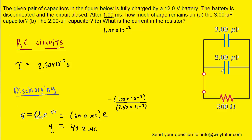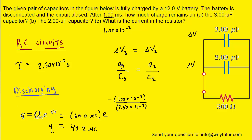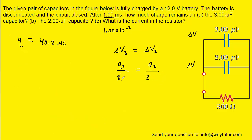Bringing back the original two capacitors, we see they are still in parallel. Parallel capacitors have the same potential difference, so we set the potential difference across the 3 microfarad capacitor equal to that across the 2 microfarad capacitor. Since V = Q/C, we fill in 3 microfarads and 2 microfarads respectively. The microfarads cancel, and multiplying both sides by 3 gives us Q3 = (3/2)Q2.